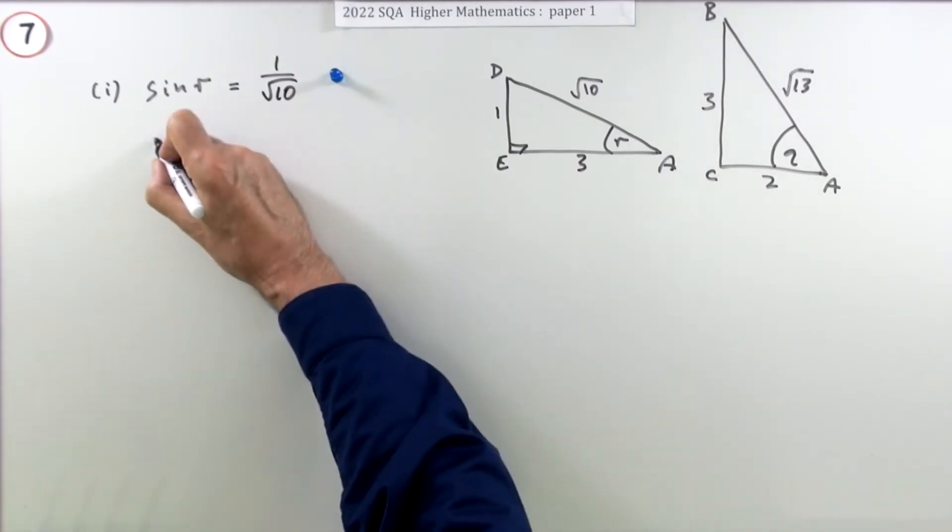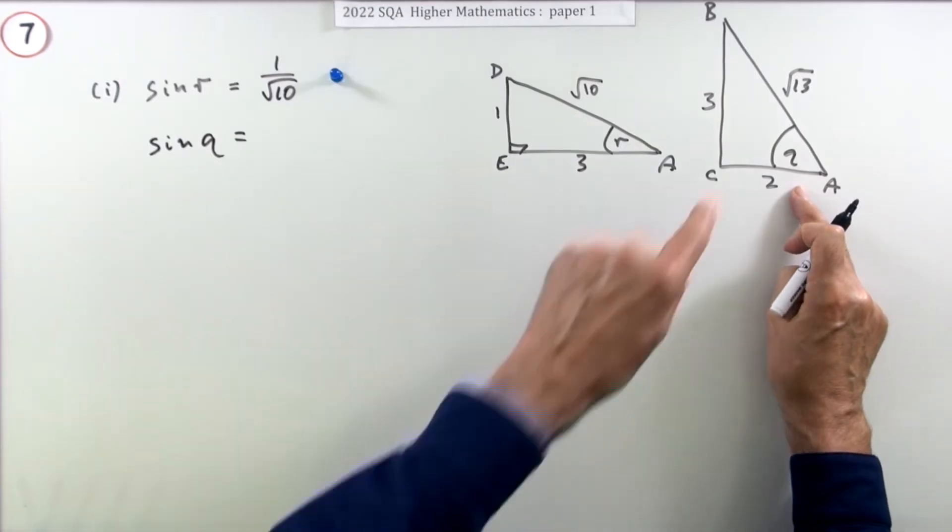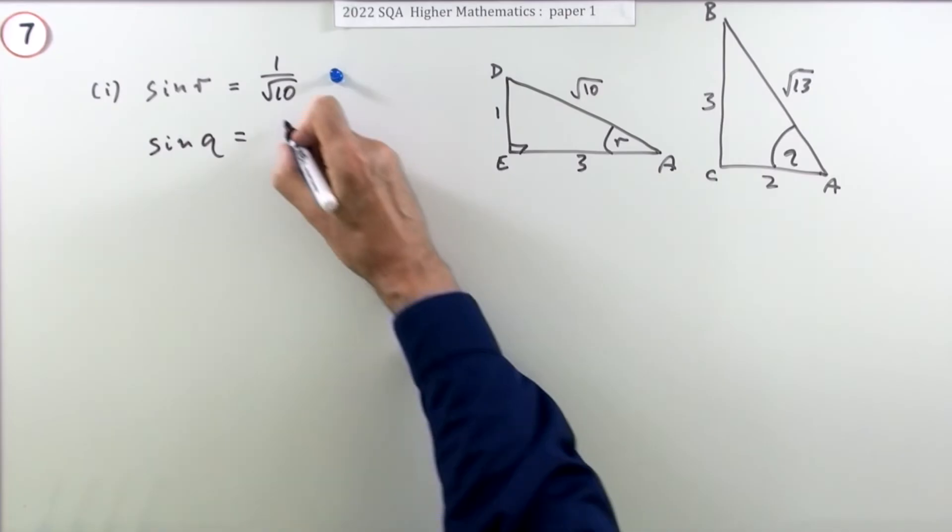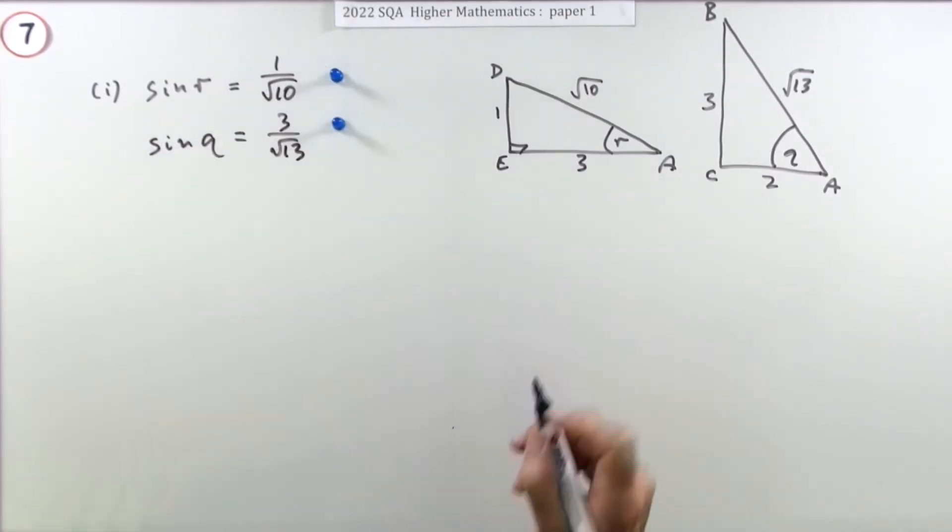Then it says, what's the sine of Q? So back to this triangle. The sine of Q, it's opposite over its hypotenuse, 3 over root 13. I guess that mark.